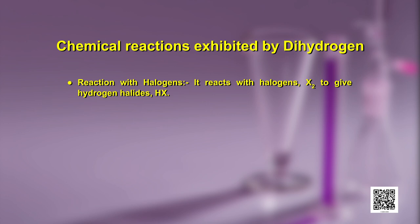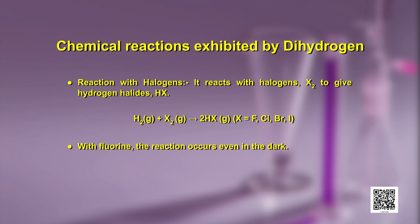The first reaction is reaction with halogens. Dihydrogen reacts with halogens (X₂) to give hydrogen halides (HX). Fluorine, chlorine, bromine, and iodine all react with hydrogen to form hydrogen halides. With fluorine, the reaction occurs even in the dark, and with iodine it requires a catalyst.